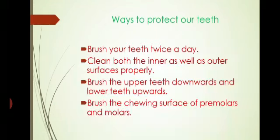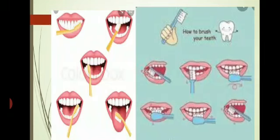Now we come to the ways to protect our teeth. To protect the tooth from getting decayed, what are the various ways? First of all, we should follow some of these things. First is brush your teeth twice a day, that is in the morning and before bedtime. Clean both the inner and outer surface of teeth properly. Brush the upper teeth downward and lower teeth upward. Brush the chewing surface of premolars and molars. As shown in the picture over here, the proper way to brush the teeth.